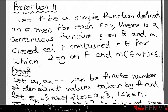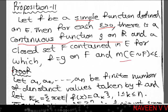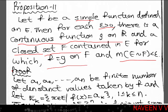Proposition 11: Let F be a simple function defined on E. Then for each epsilon greater than 0, there is a continuous function G on R and a closed set F contained in E for which F equals G on F and measure of E minus F is less than epsilon. Given a simple function F defined on E, for each positive real number epsilon, we need to find a continuous function G defined on the set of real numbers and a closed subset F satisfying the two conditions: F equal to G on F, and measure of E minus F less than epsilon.